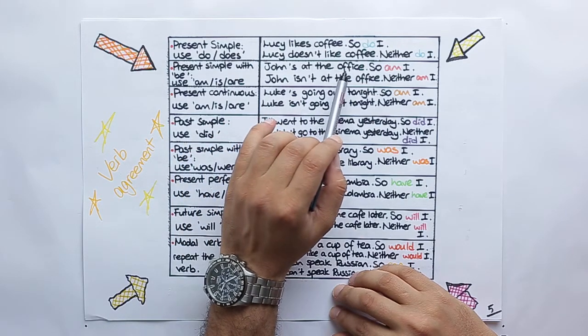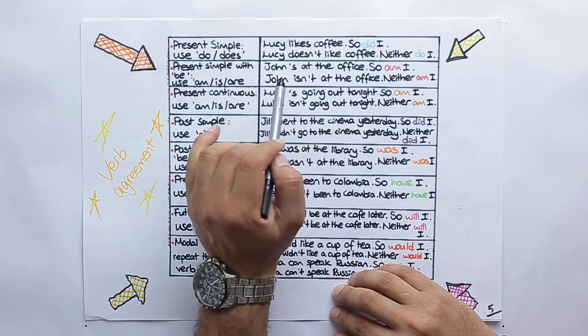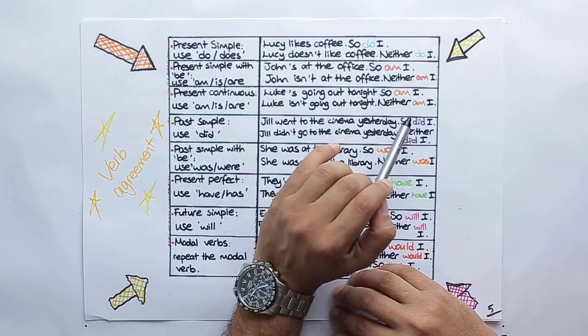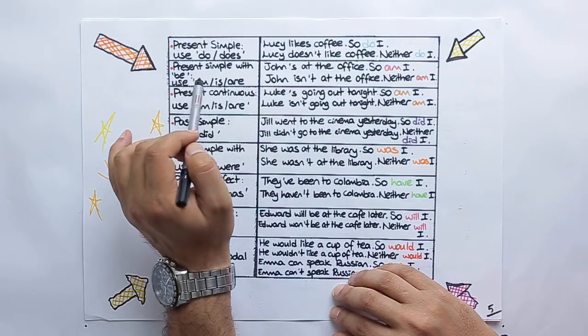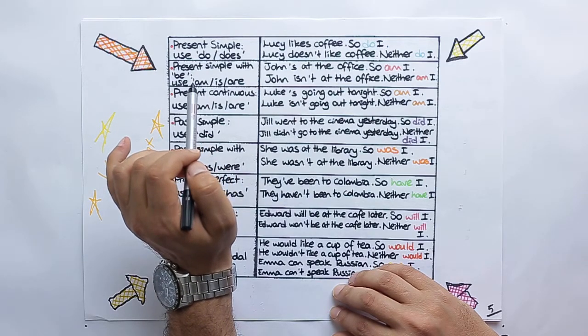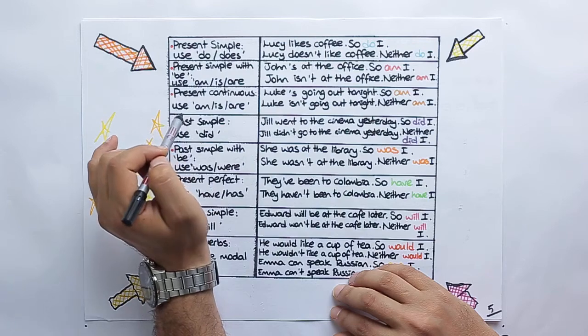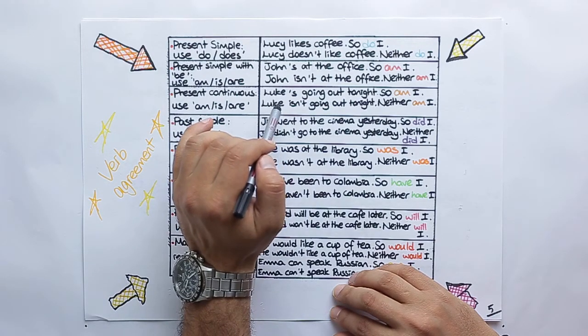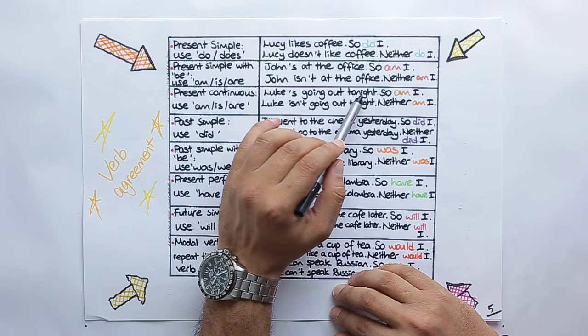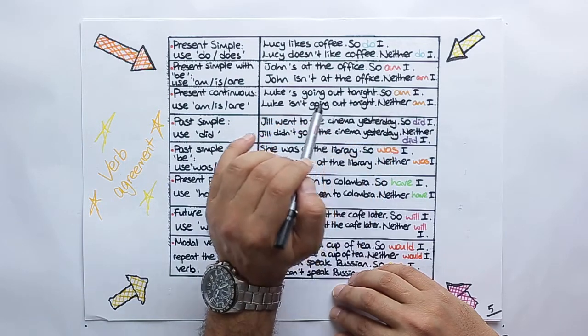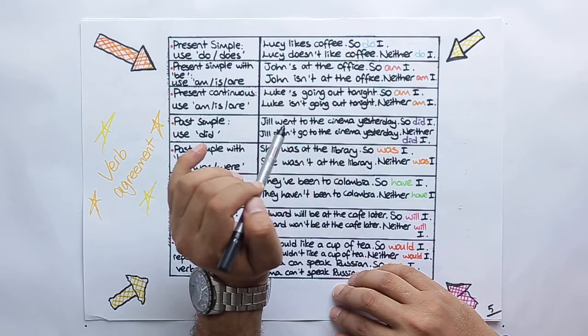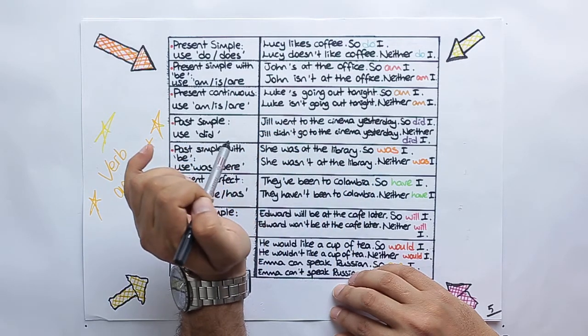John is at the office, so am I. John is not at the office, neither am I. These are the uses with am, is, are, to be forms of present simple. And with present continuous. Luke is going out tonight, so am I. Luke is not going out tonight, neither am I. These are the present continuous form.